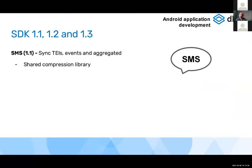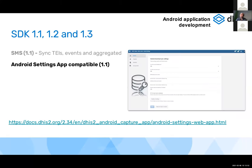From version 1.1, we also allow synchronization via SMS when there is no internet — you can sync TEIs, events, and aggregated values using a compression library shared with the DHIS2 core. The Android Settings web app, released in October 2020, lets you define different synchronization parameters.